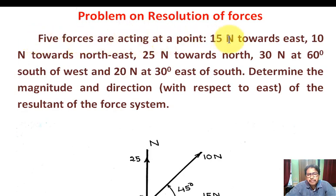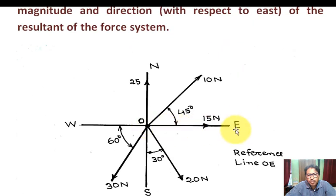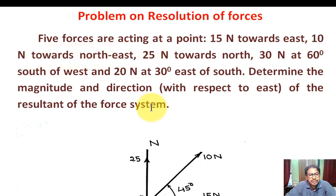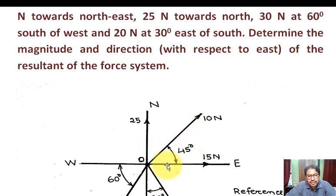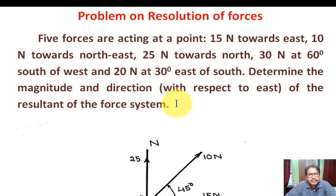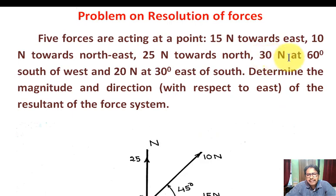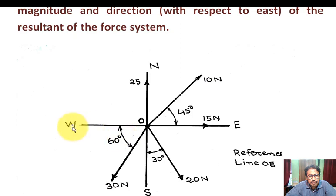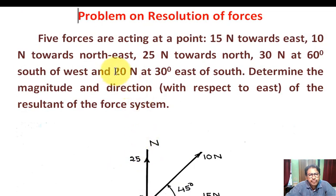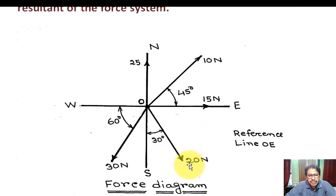Recap: 15 Newton towards east, 10 Newton towards north-west, 25 Newton towards north, 30 Newton at 60 degrees south of west — angle with west 60 degrees — and 20 Newton at 30 degrees east of south — angle with south 30 degrees.